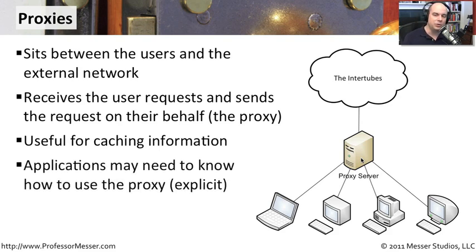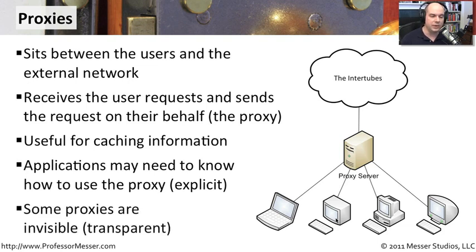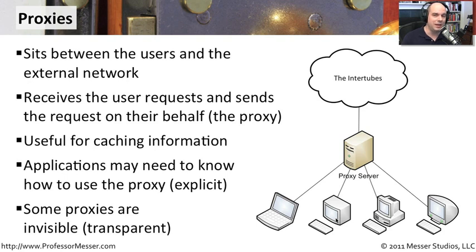There are two ways to configure how your systems use the proxy server. If it's an explicit proxy, you must configure your browser and other applications to know the proxy is there and to use it. As a security administrator, you'd need to find an automated way to push those changes to users' browsers and any other application accessing the internet. There's also a transparent proxy, where you don't have to configure anything for end users — no browser or app settings to change. However, some applications will not work properly through a transparent proxy, since changes are still being made to the network communication.